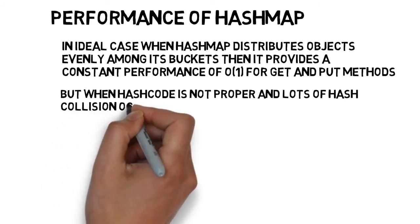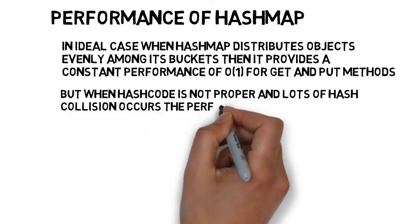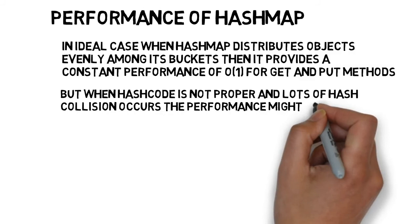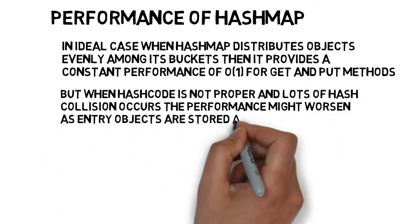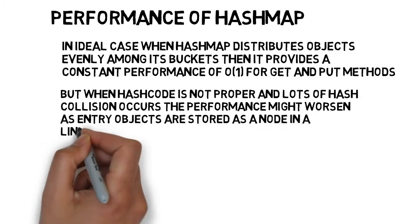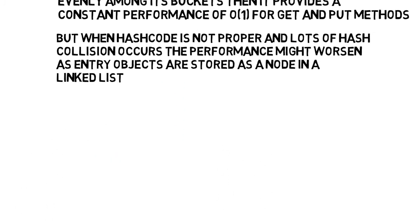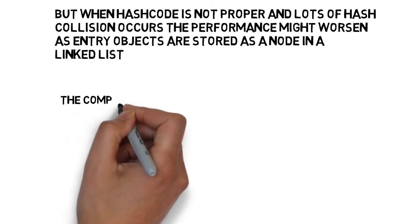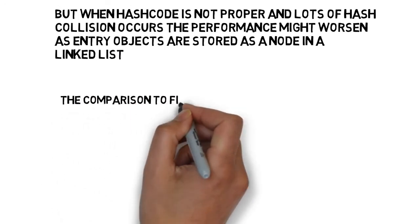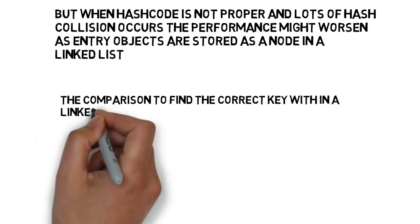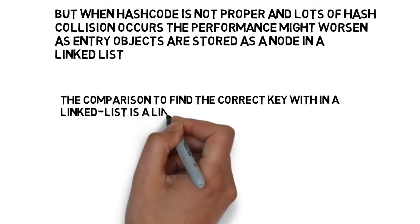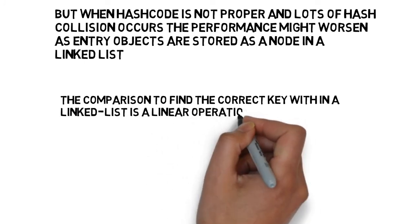But when hash code is not proper, then lots of hash collision occurs and the performance might worsen as entry objects are stored as a node in a linked list. The comparison to find the correct key within a linked list is a linear operation, so in a worst case scenario the complexity is O(N).